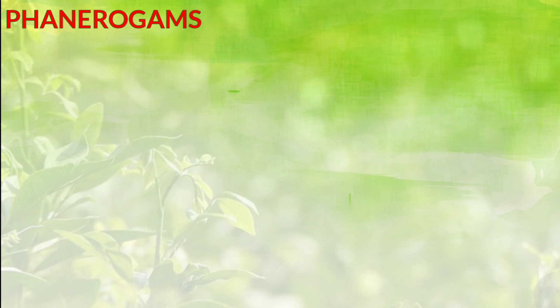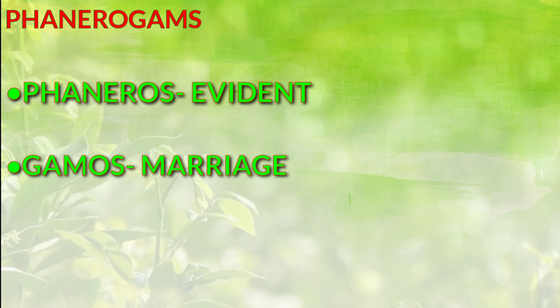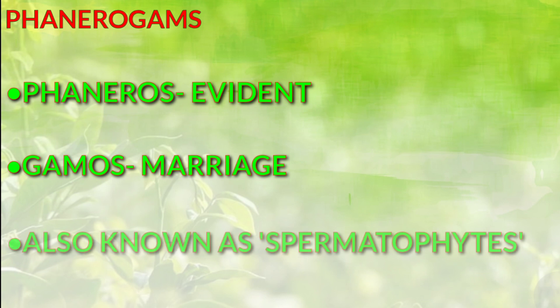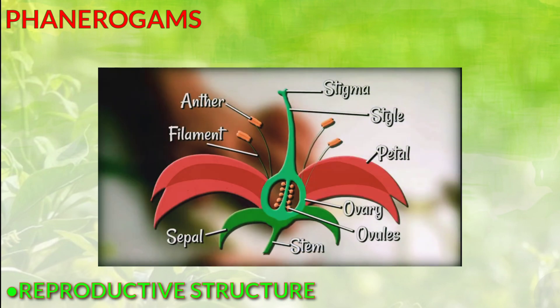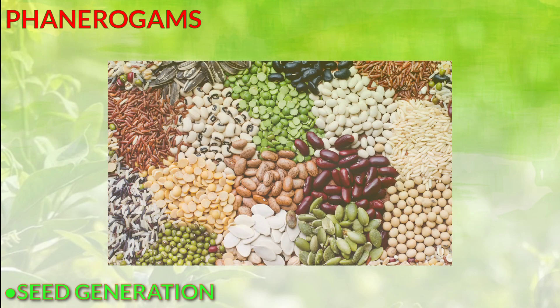The word phanerogames is made up of two Greek words: 'pheneros' which means evident and 'gamos' which means marriage. These are also known as spermatophyte. Phanerogames are plants that have special structures for reproduction and generate seeds.